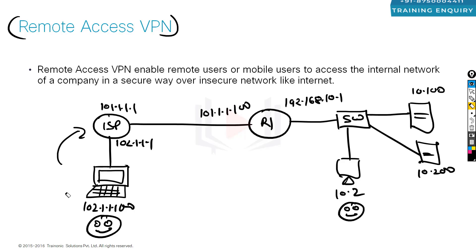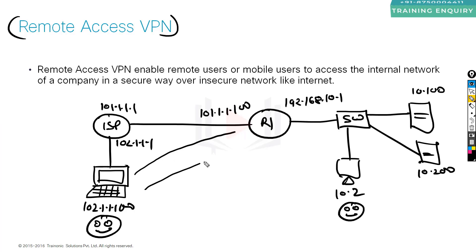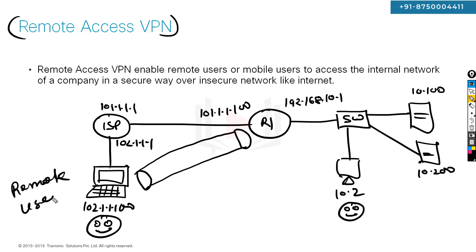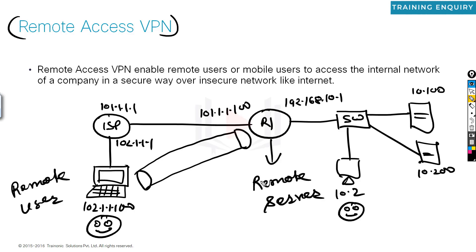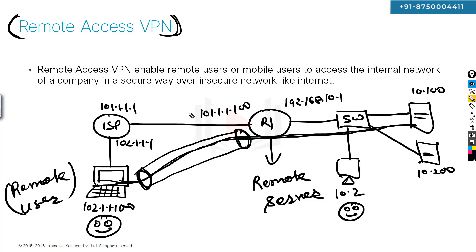To solve this problem, we will use Remote Access VPN between this remote client and R1. We will configure remote access VPN between the remote user and R1 acting as the remote server. Using Remote Access VPN, the remote user or mobile user can access the internal network of a company in a secure way. This tunnel will be established through the ISP.